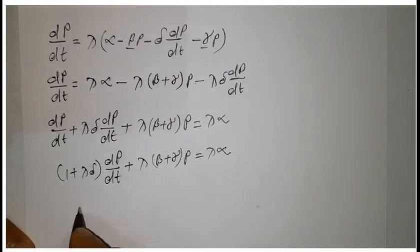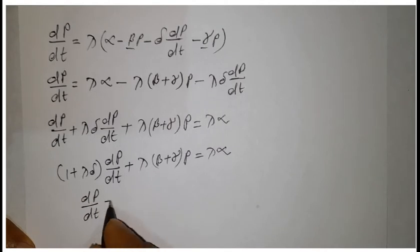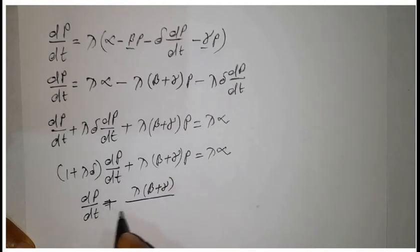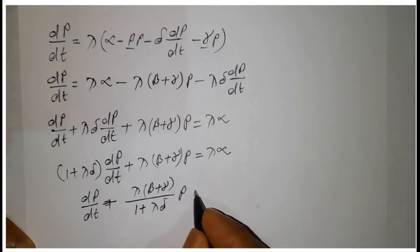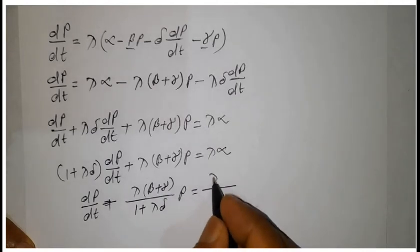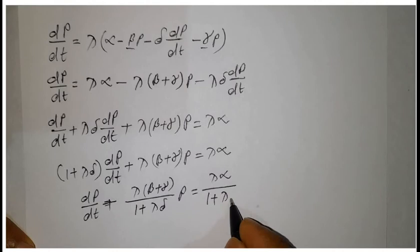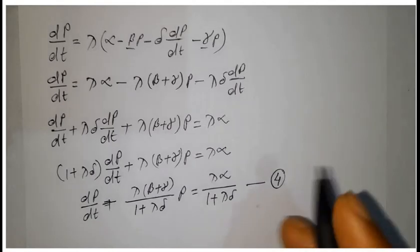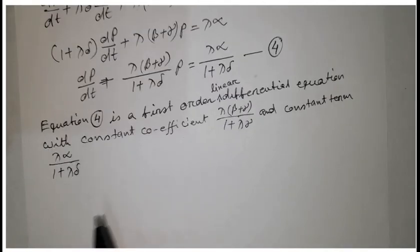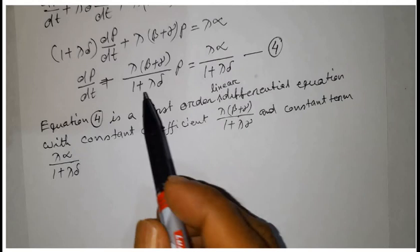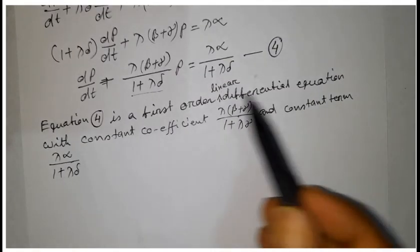This implies dP/dt plus [lambda·(beta plus gamma) divided by (1 plus lambda·delta)]·P equals lambda·alpha divided by (1 plus lambda·delta). This is equation number 4. Equation 4 is a first-order linear differential equation with constant coefficient and constant term.